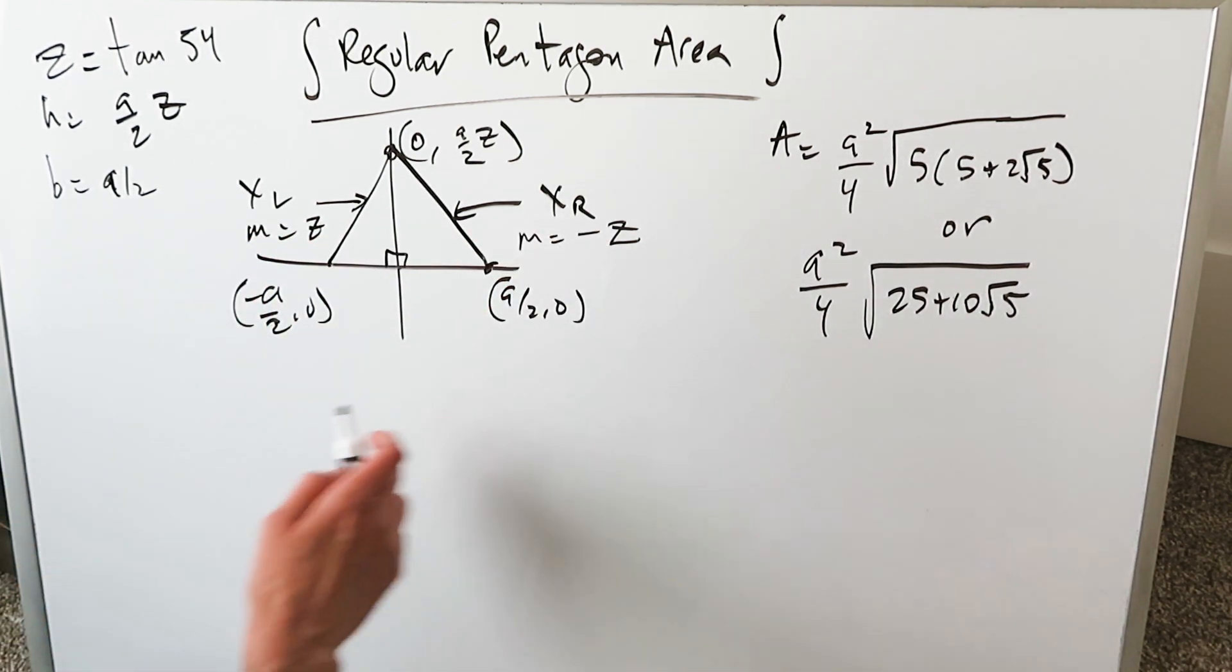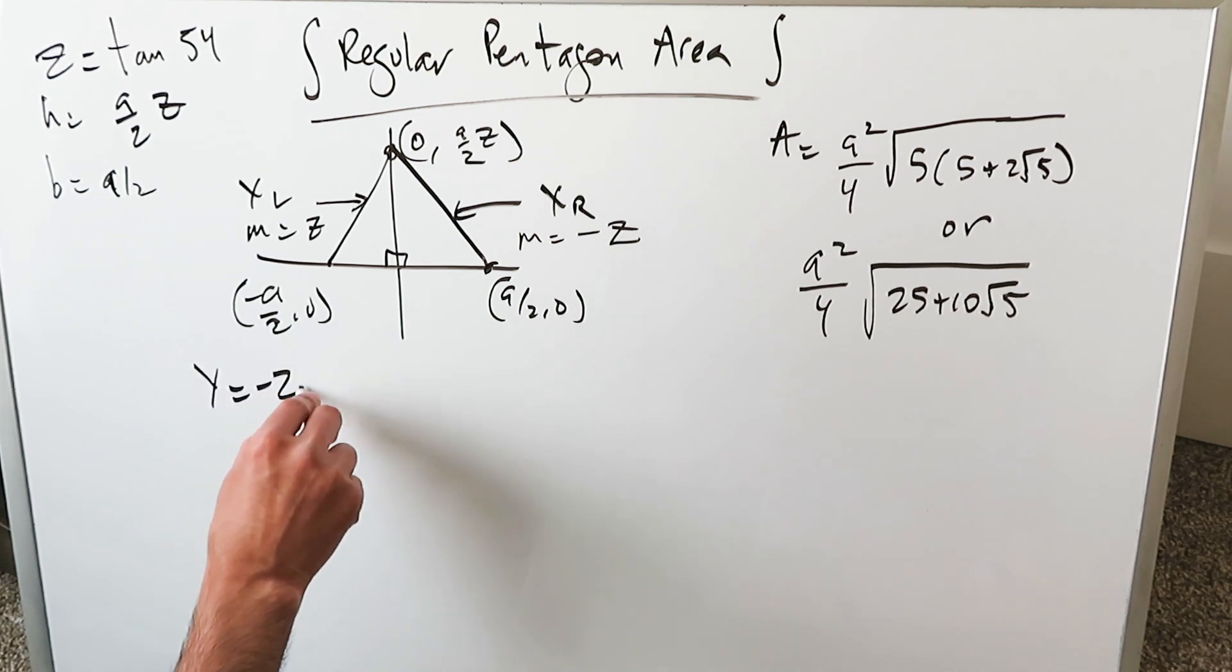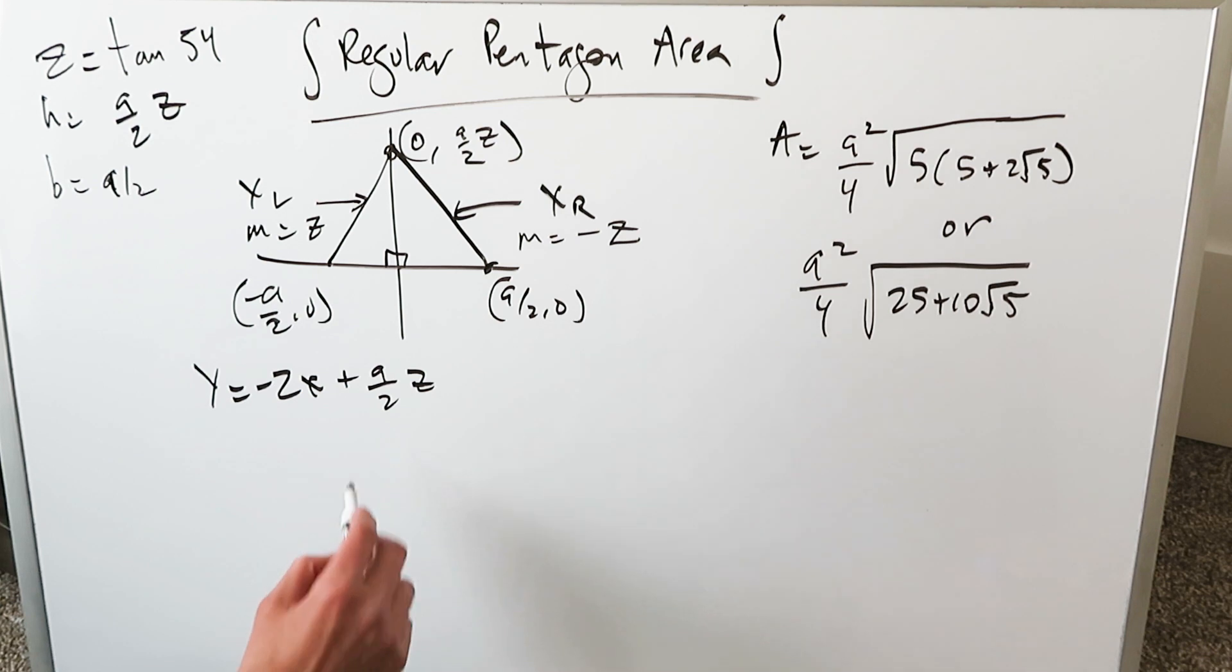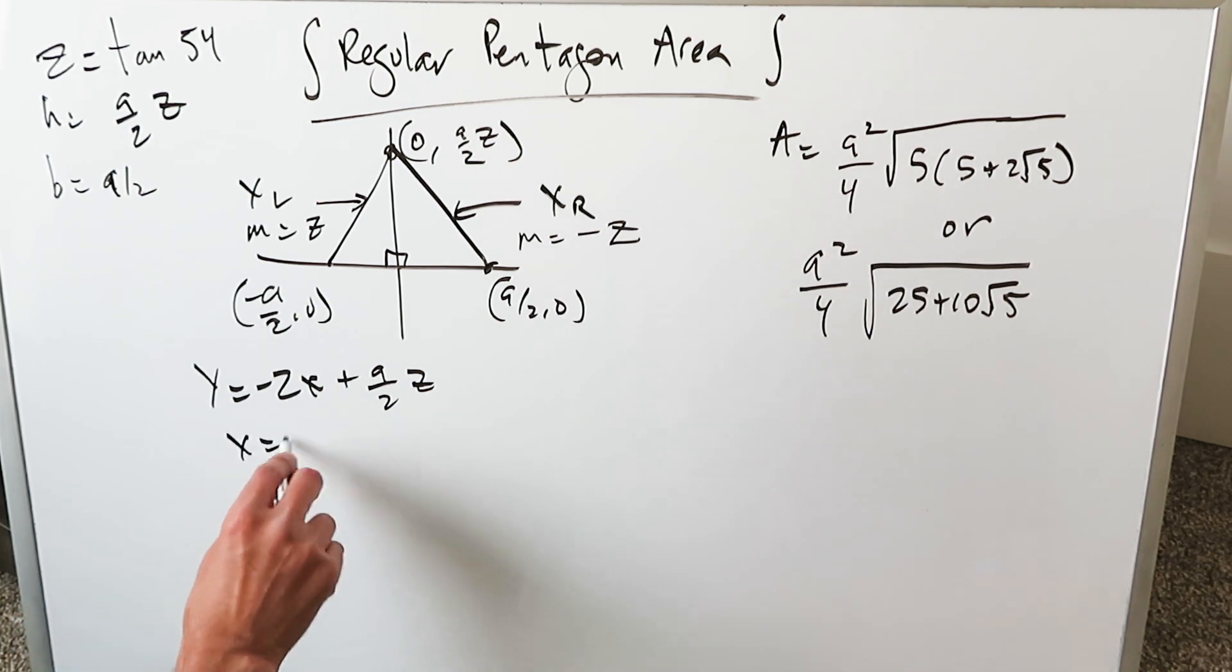The equation over here I have done the work is going to be Y is equal to minus Z times the quantity X plus A over 2 Z. You solve for X because you have to present equations in the X form.